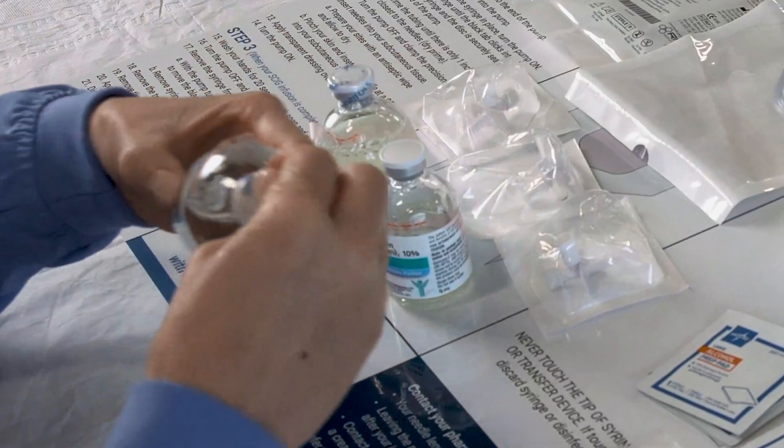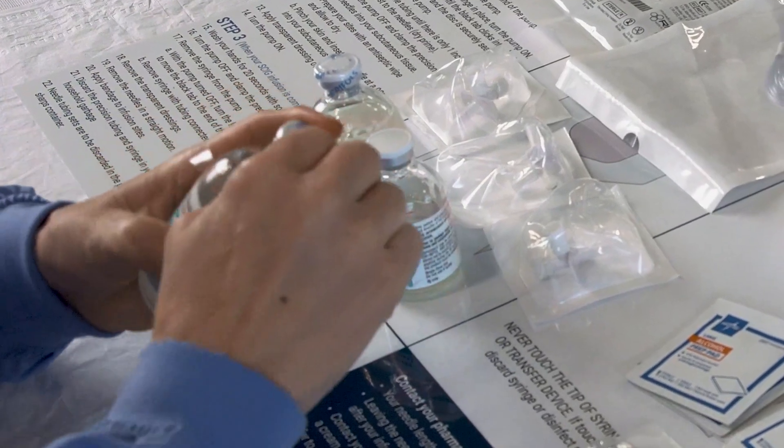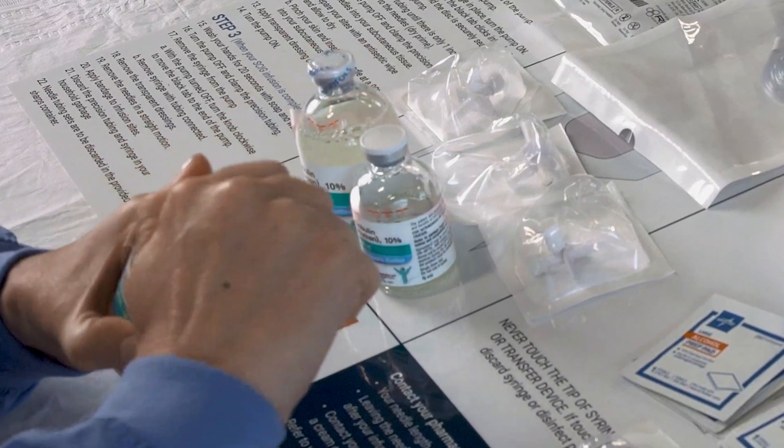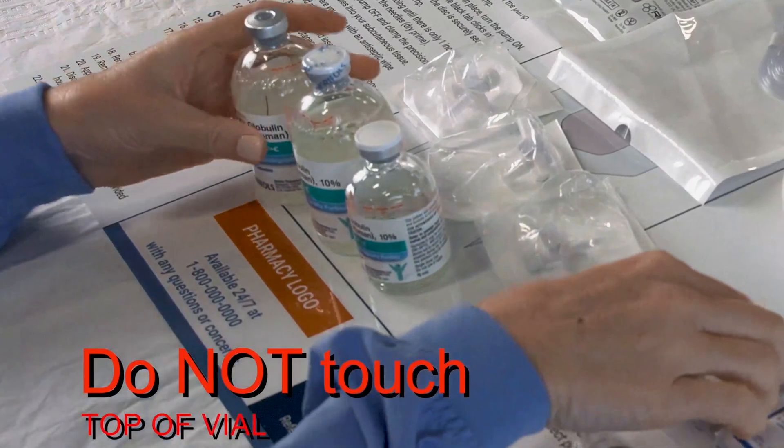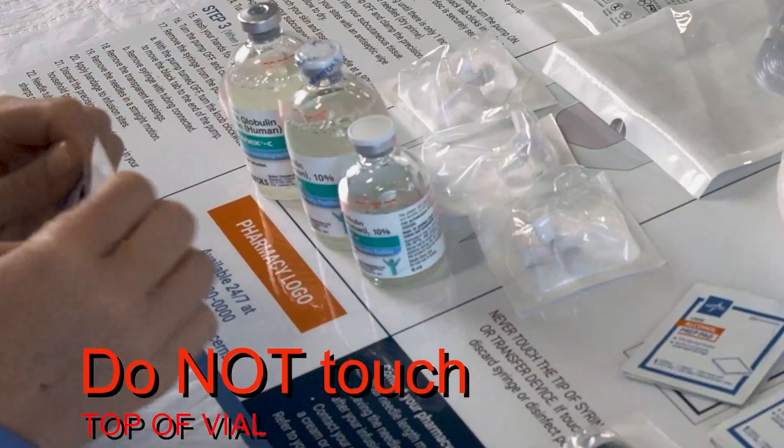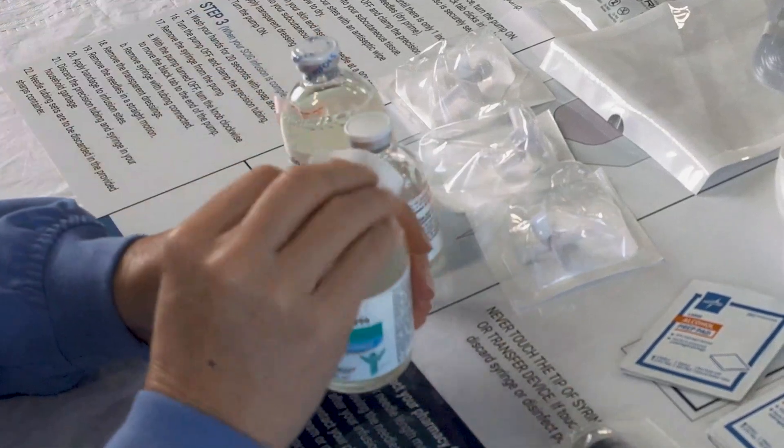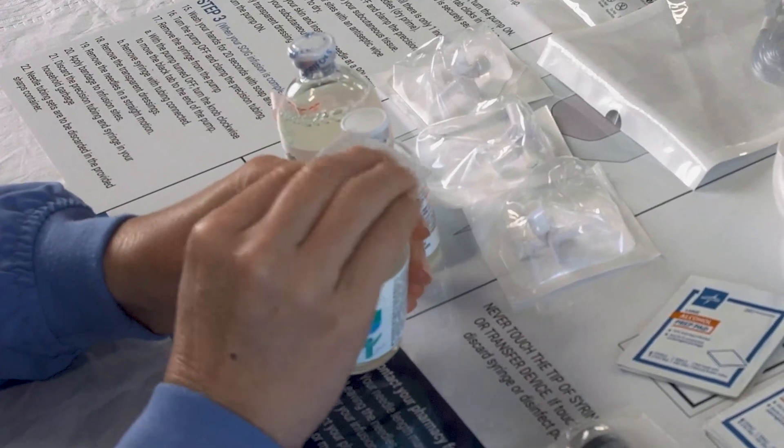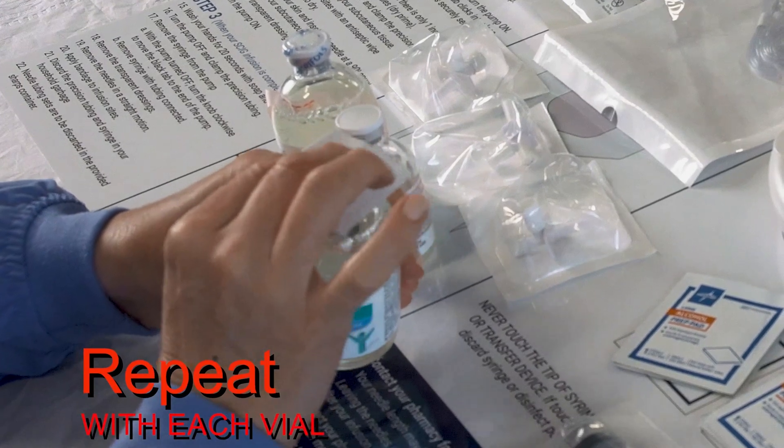Remove the protective caps from your immunoglobulin vials and wipe the top of each vial vigorously for 30 seconds with an antiseptic wipe, and allow to dry. Repeat with each vial.